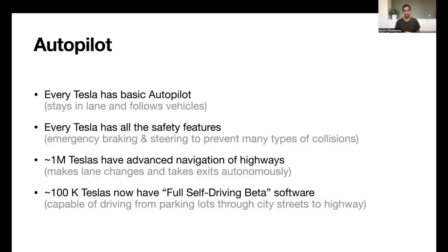So this software, for example, would make the car be able to stop at traffic lights and stop signs, properly yield for vehicles that are crossing and make protected and unprotected left and right turns, go around parked cars and other obstacles. And this is again in the hands of 100,000 Tesla customers.